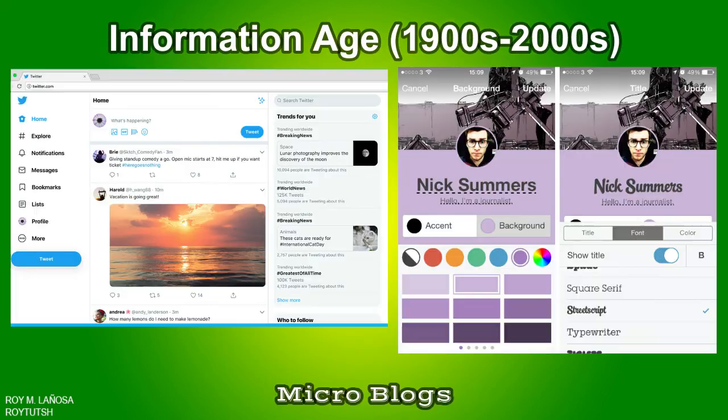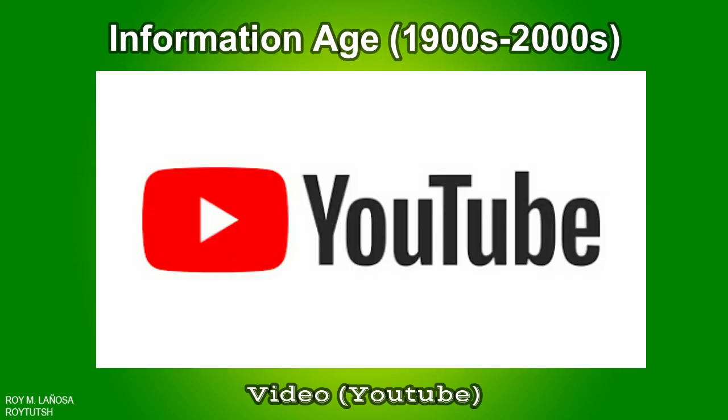Micro-blogs are an online broadcast medium that exist as a specific form of blogging. A micro-blog differs from a traditional blog in that its content is typically smaller in both actual and aggregated file size. Examples of micro-blogs include Twitter and Tumblr. YouTube is an American online video-sharing platform headquartered in San Bruno, California.